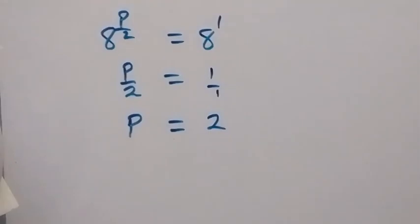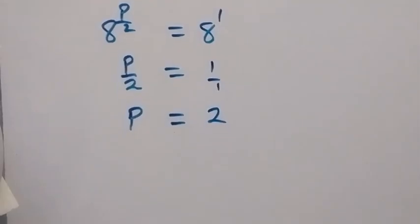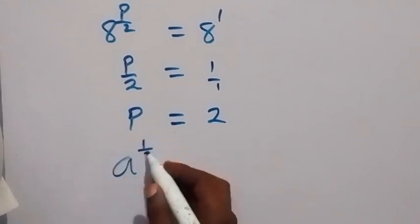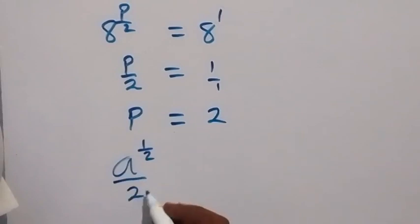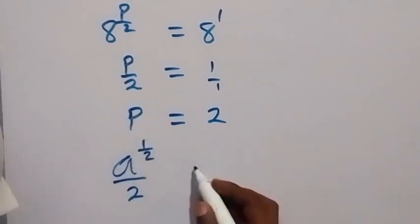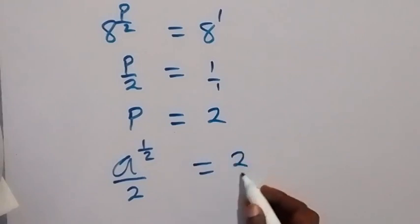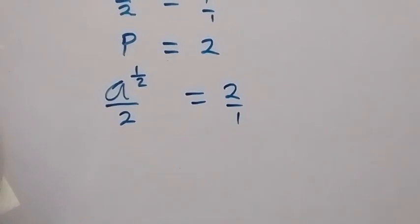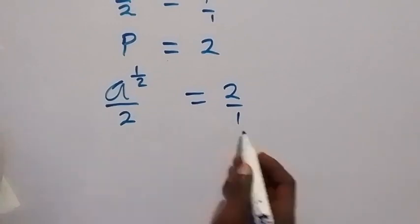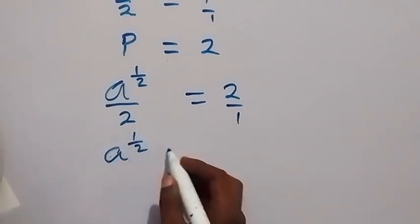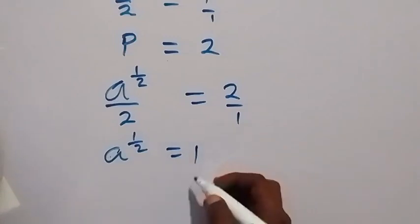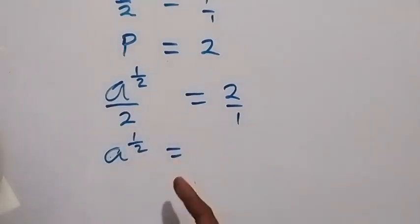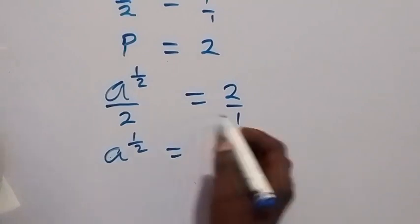Recalling that we represented p as a raised to power half over 2, we now equate this to 2. Cross-multiplying gives us a raised to power half times 1 equals 2 times 2, so a raised to power half equals 4.